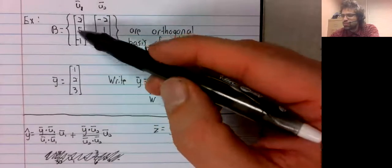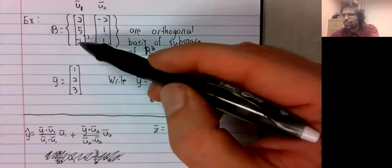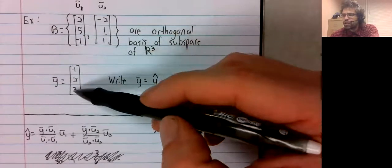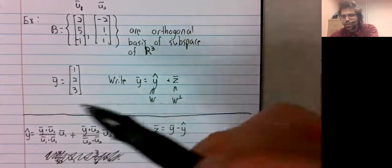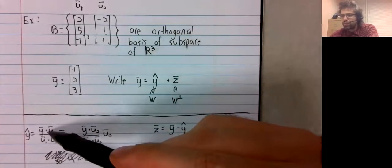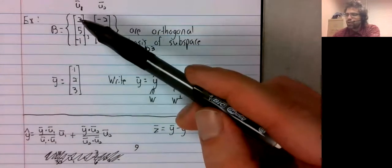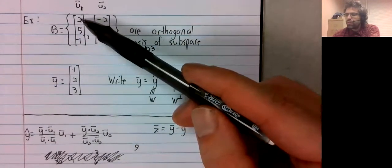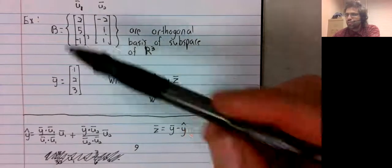Two plus 10 is 12 minus three is nine. That's y dot u1. U1 dot u1 is four plus 25 plus one.